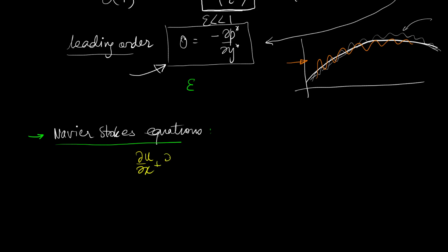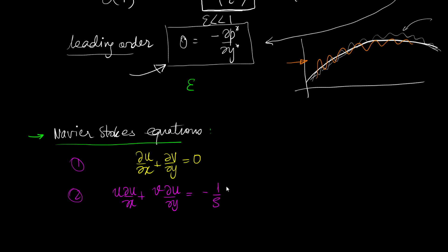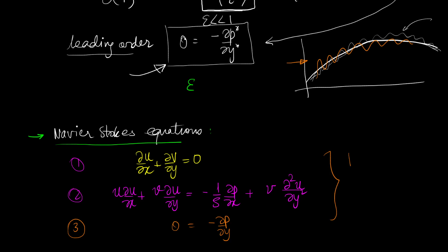The dimensional Prandtl boundary layer equations are: del u/del x + del v/del y = 0 (continuity); u del u/del x + v del u/del y = -1/rho del p/del x + nu del² u/del y² (x-momentum); and 0 = -del p/del y (y-momentum). These equations are called Prandtl's boundary layer equations.